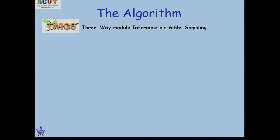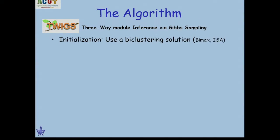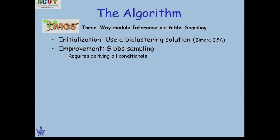The algorithm is called TWIGS — Three-Way model Inference via Gibbs Sampling. The initial solution is generated using a bi-clustering solution. We tried both BIMACs, a very good enumerative solution for binary values, and ISA from Mabarkai's group that works well on continuous data. Improvement is done via Gibbs sampling: each time we fix the values of all variables, compute the posterior for a single variable and improve, cycling through all variables. The technical part is deriving all the conditionals.